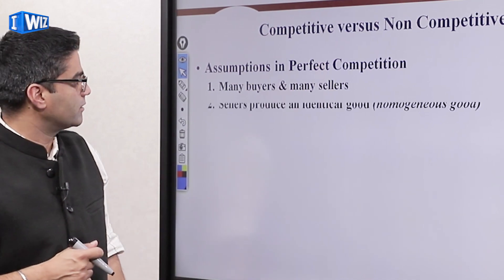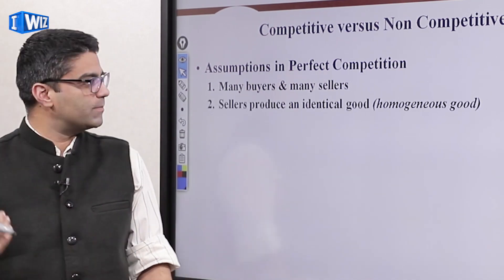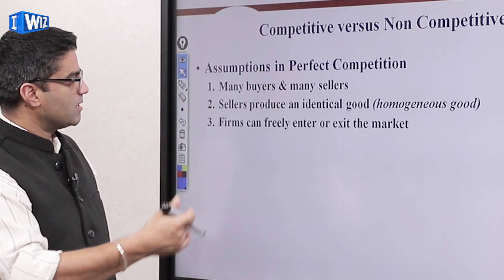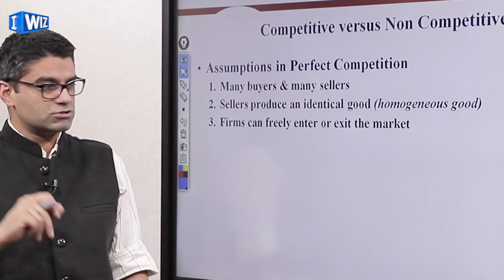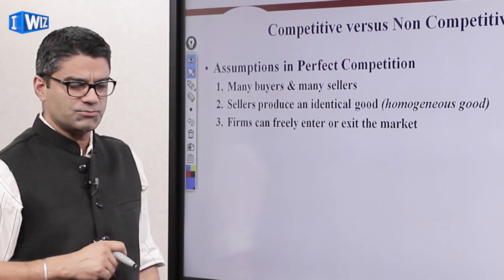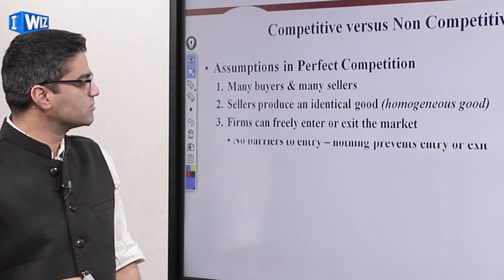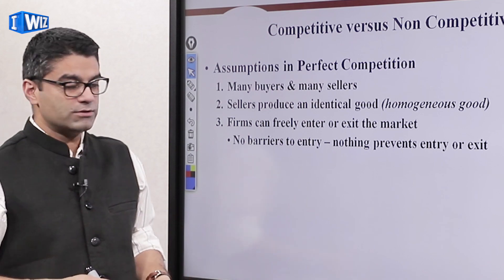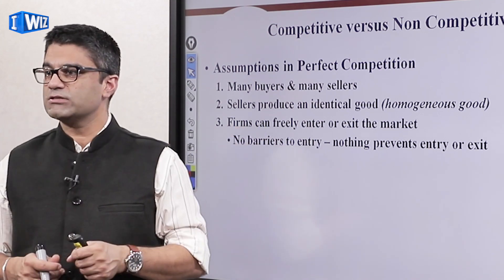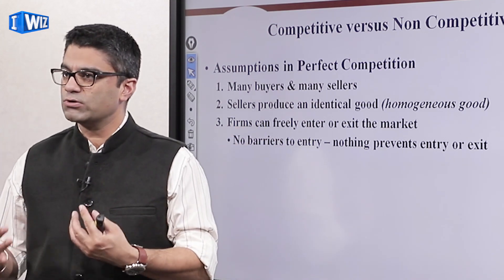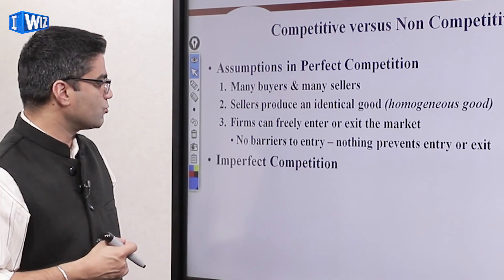The assumptions of perfect competition — which should not be new — are: there are many, many buyers; sellers are producing identical goods, which was a somewhat restrictive assumption; and firms can enter and exit without any problem, meaning there are no barriers to entry. You'll see that it's the barriers to entry that cause monopolies to continue to exist, preventing other firms from entering the market.